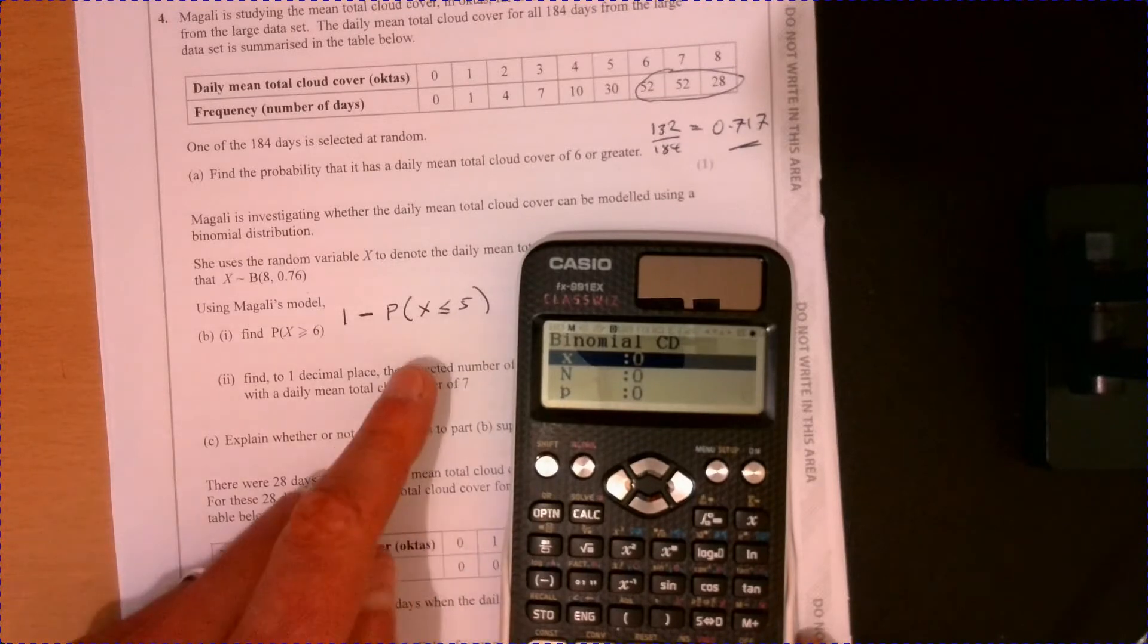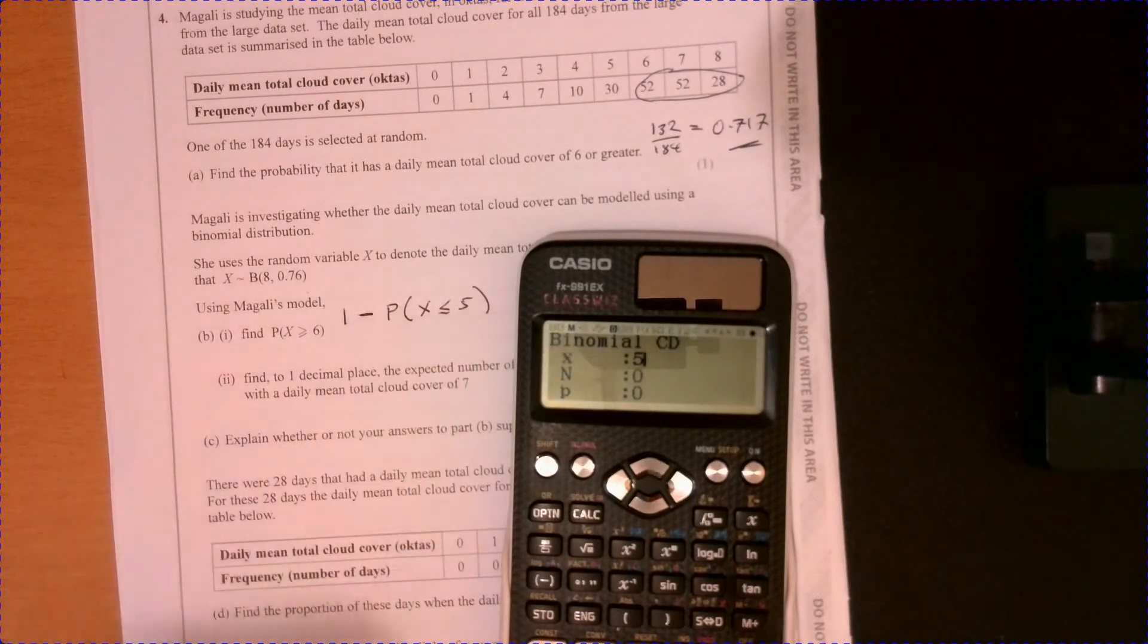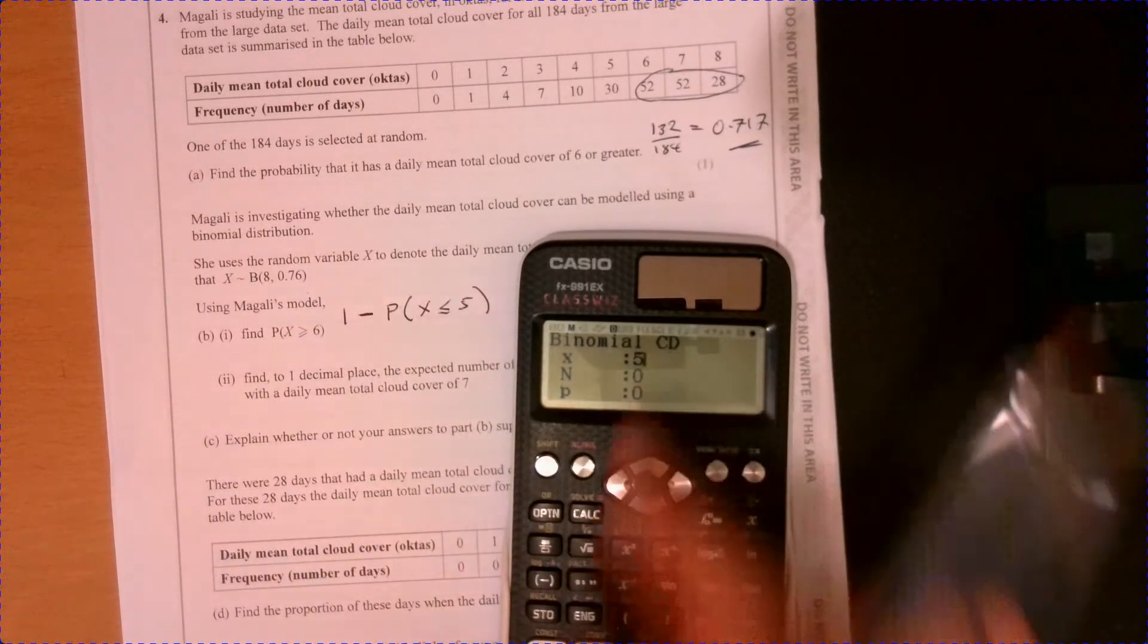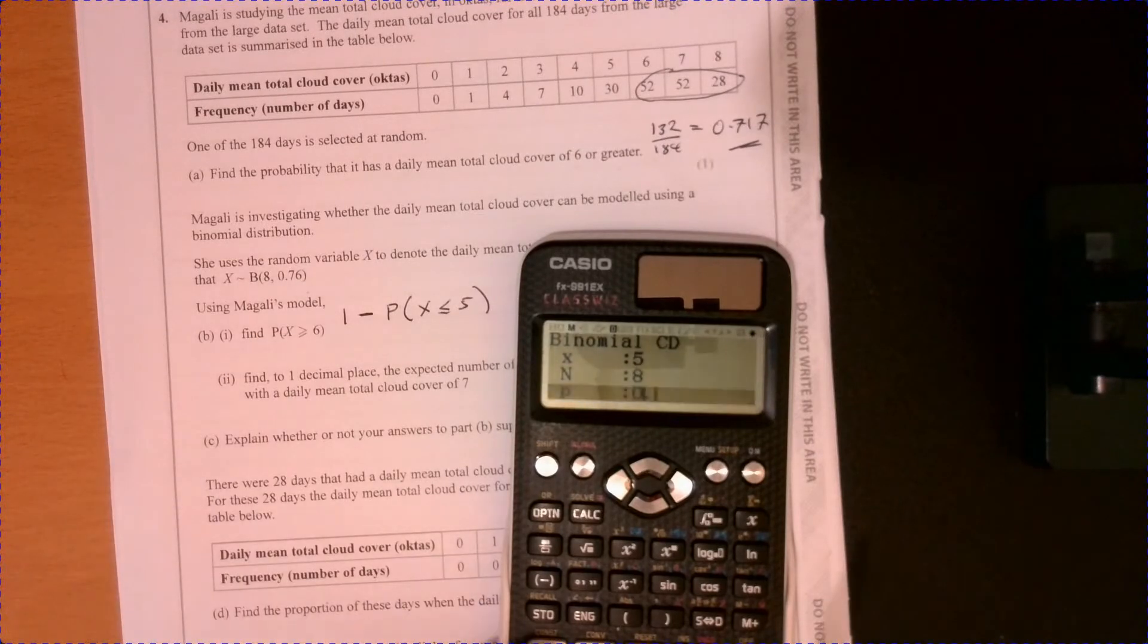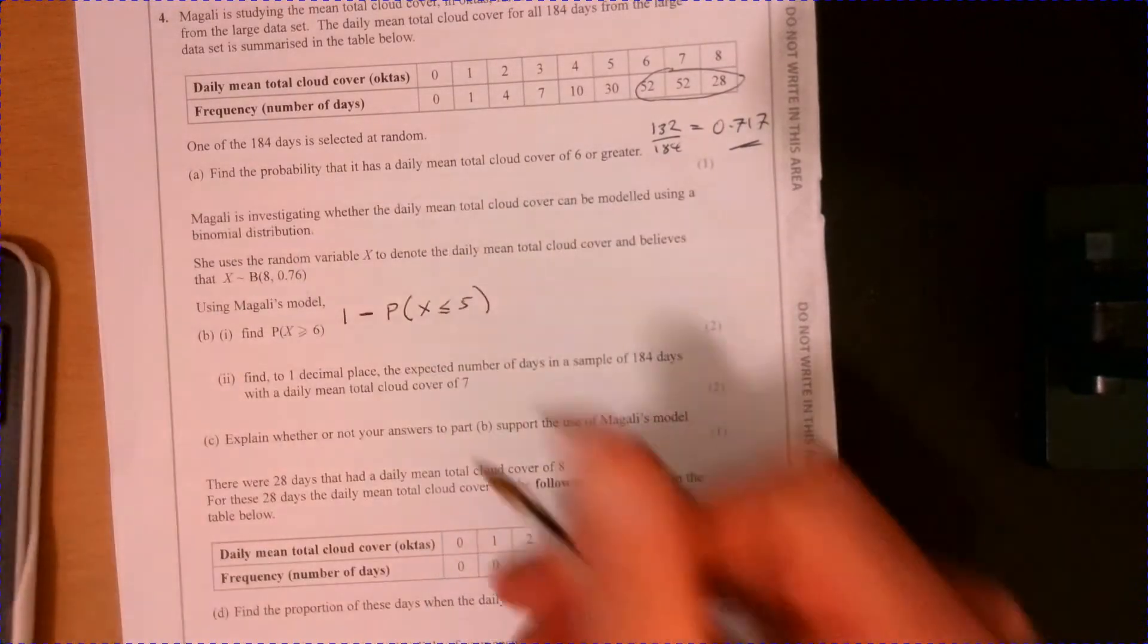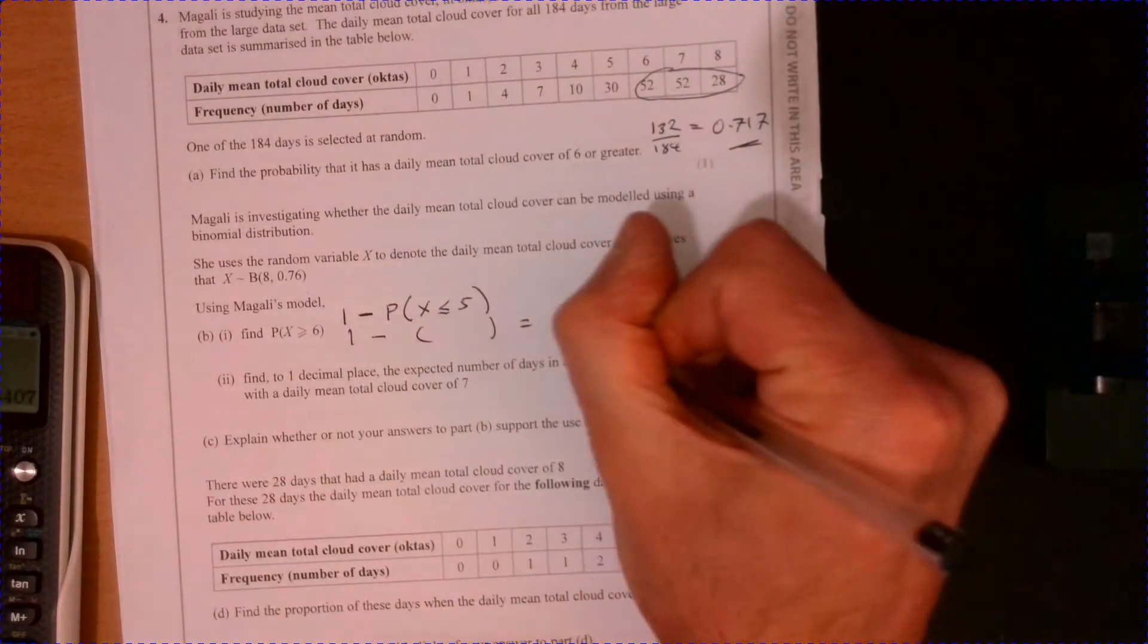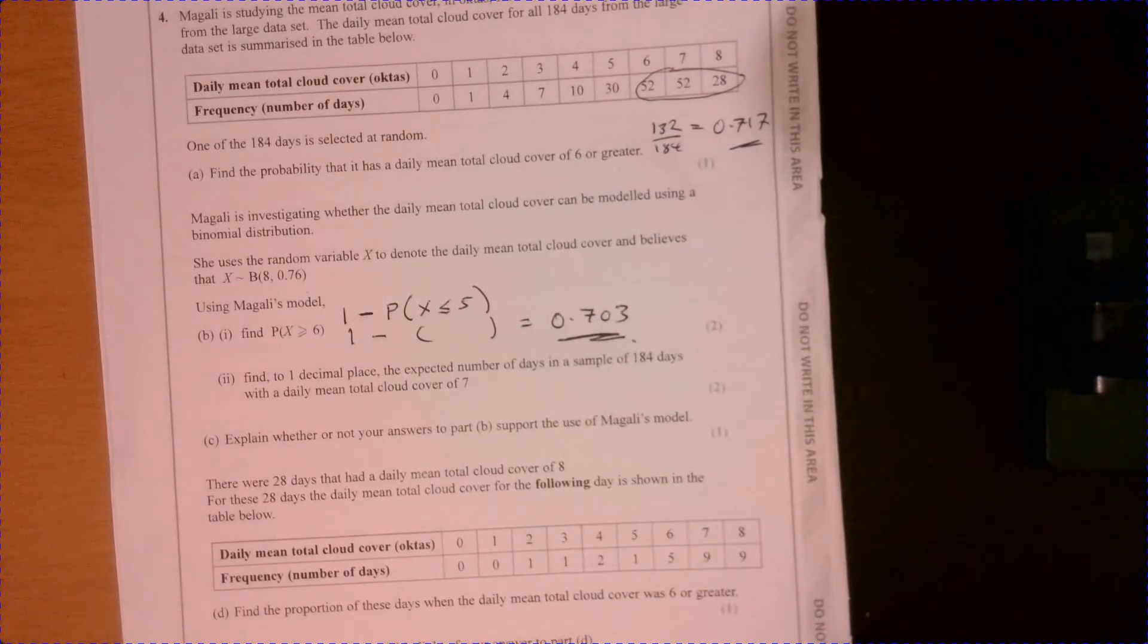And we've got five. I'm looking at this number here. It's going to give me the answer to x being less than or equal to five, because it's cumulative. And n is 8, that's this figure over here. And the probability is 0.76. So if I work that out, that gives me 0.2967. So 1 take away that figure, and that gives me an answer of 0.703.